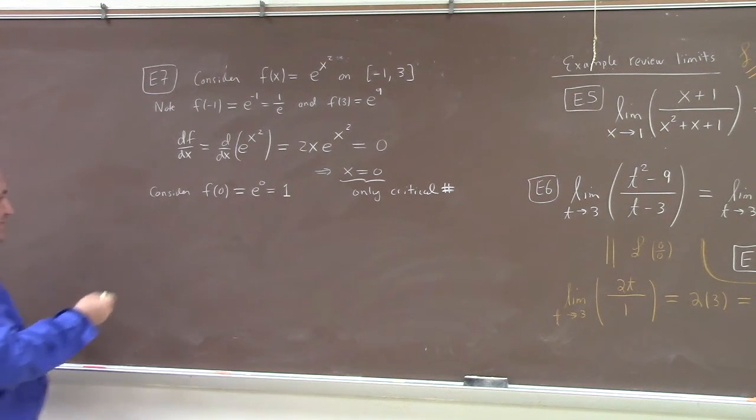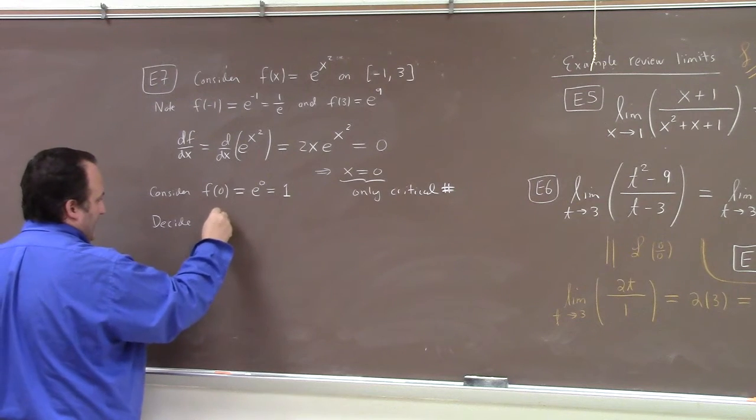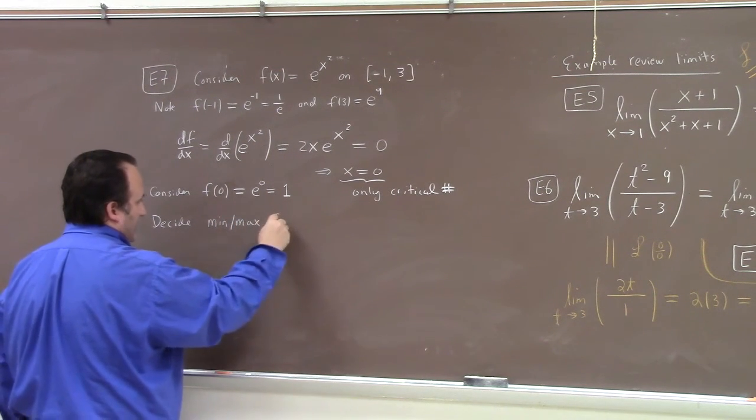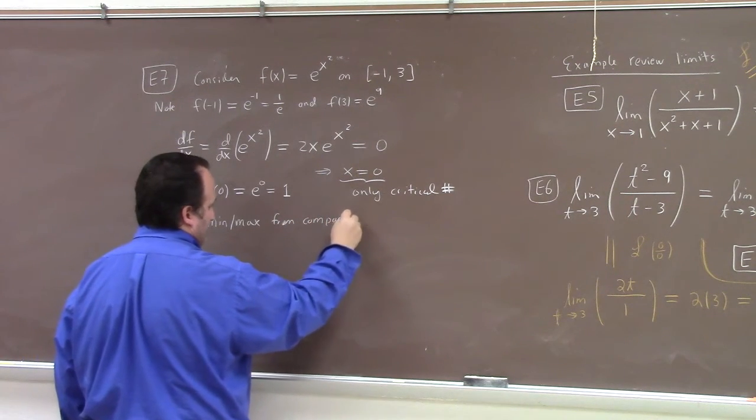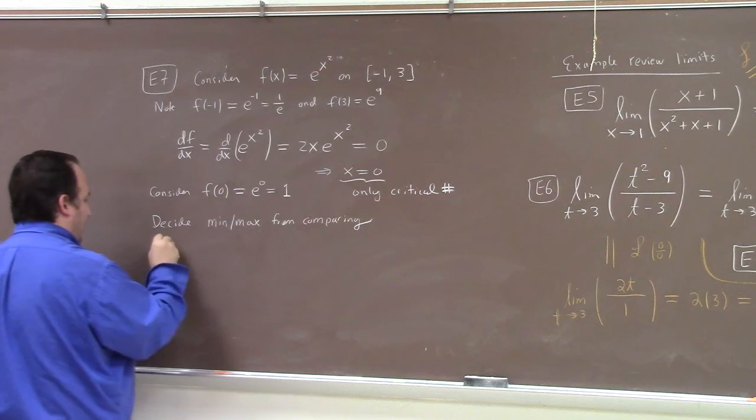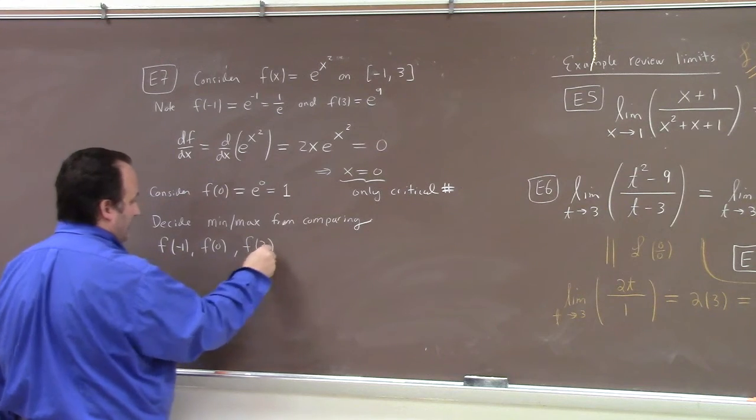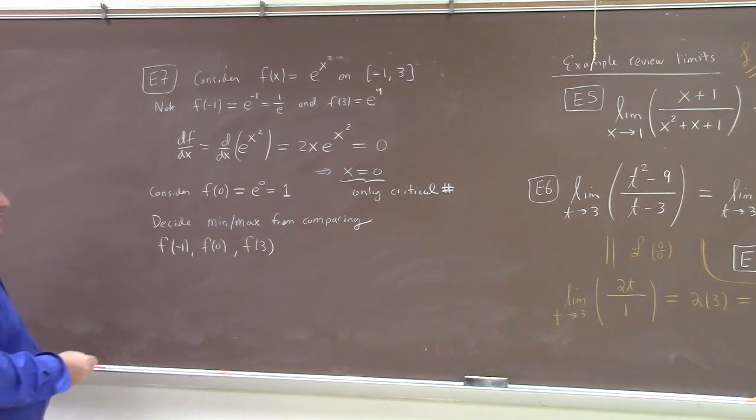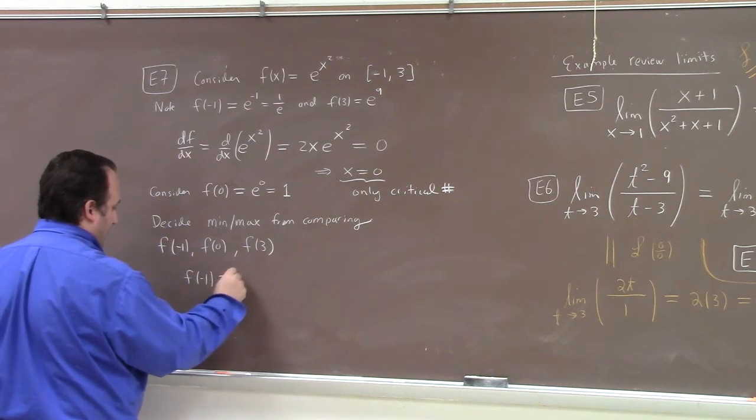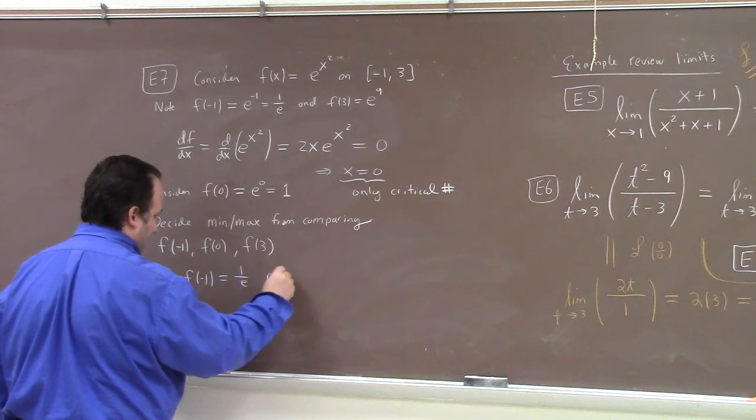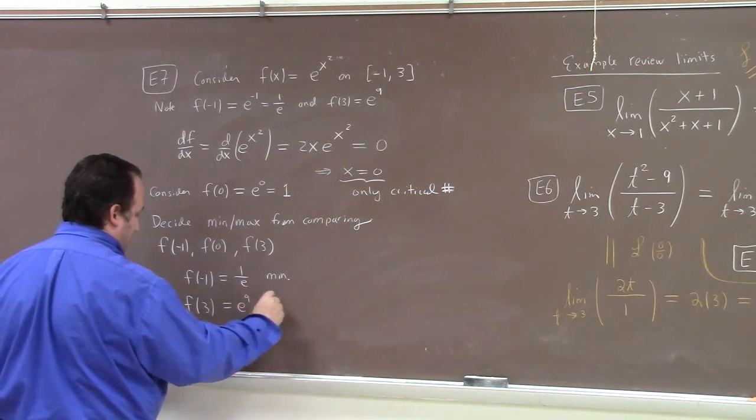So then, to decide the min and max, you decide the min max from comparing f of minus 1, f of 0, and f of 3, right? f of minus 1 equals to 1 over e is the minimum, and f of 3 equals e to the 9 is the maximum.